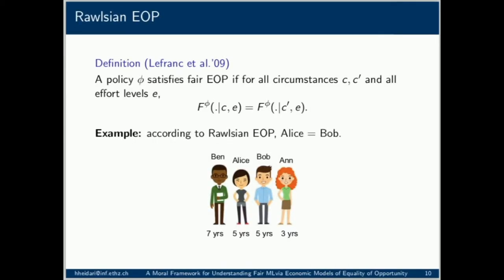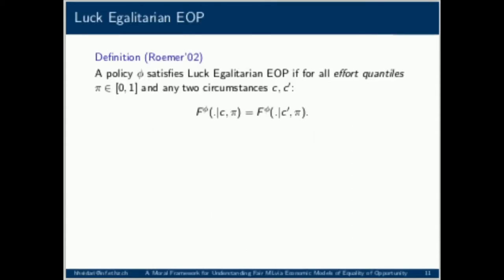Going back to our employment example, suppose we have four applicants: Alice and Bob, who both have five years of education, and Anna and Ben, who have three and seven years of education respectively. Rawlsian EOP would require Alice and Bob to have the same wage prospects because they have similar years of education.